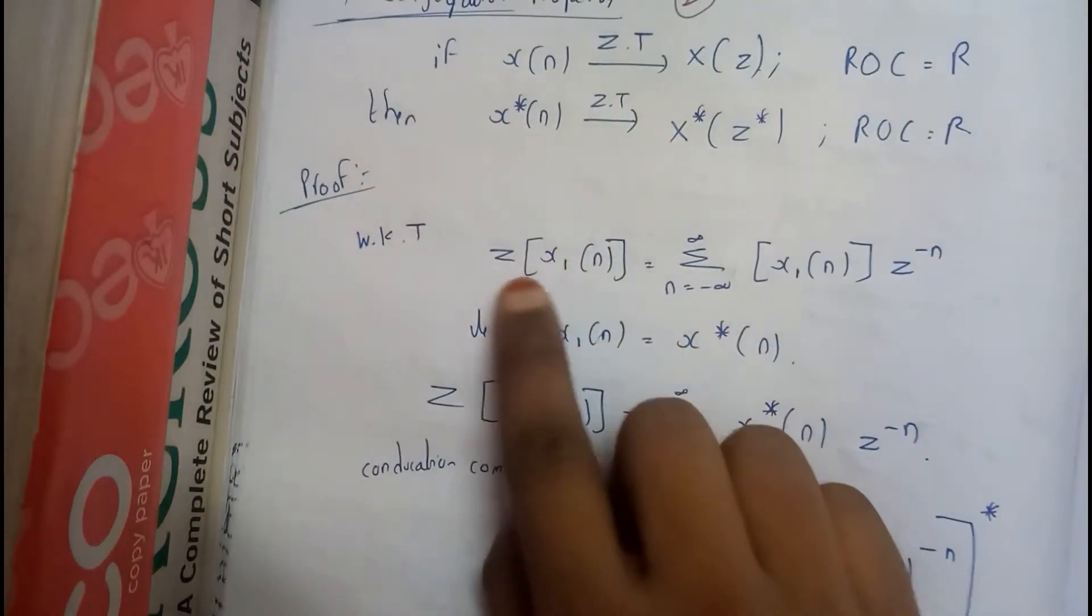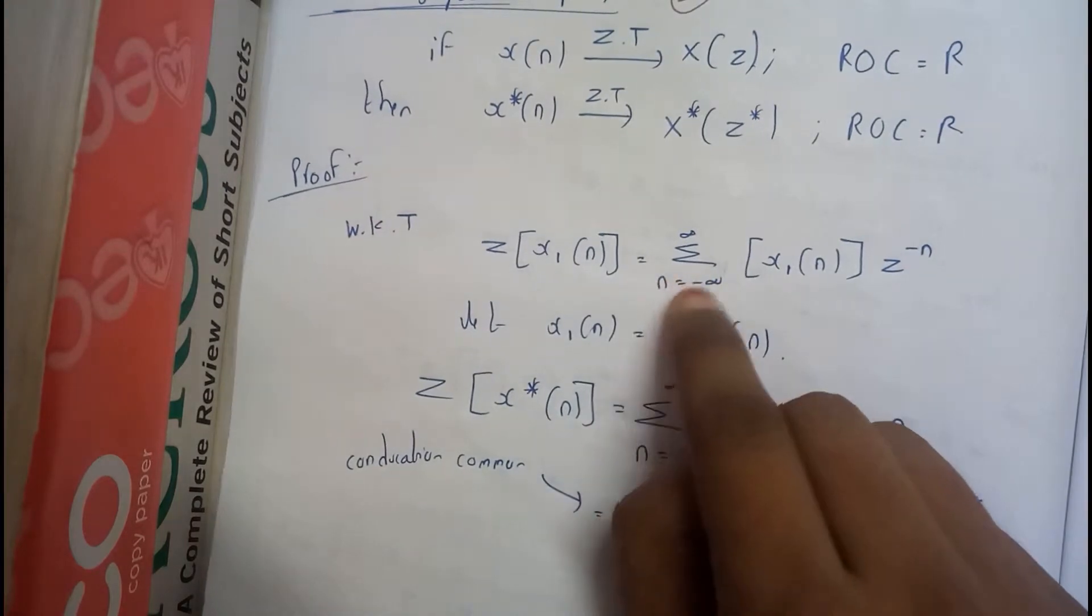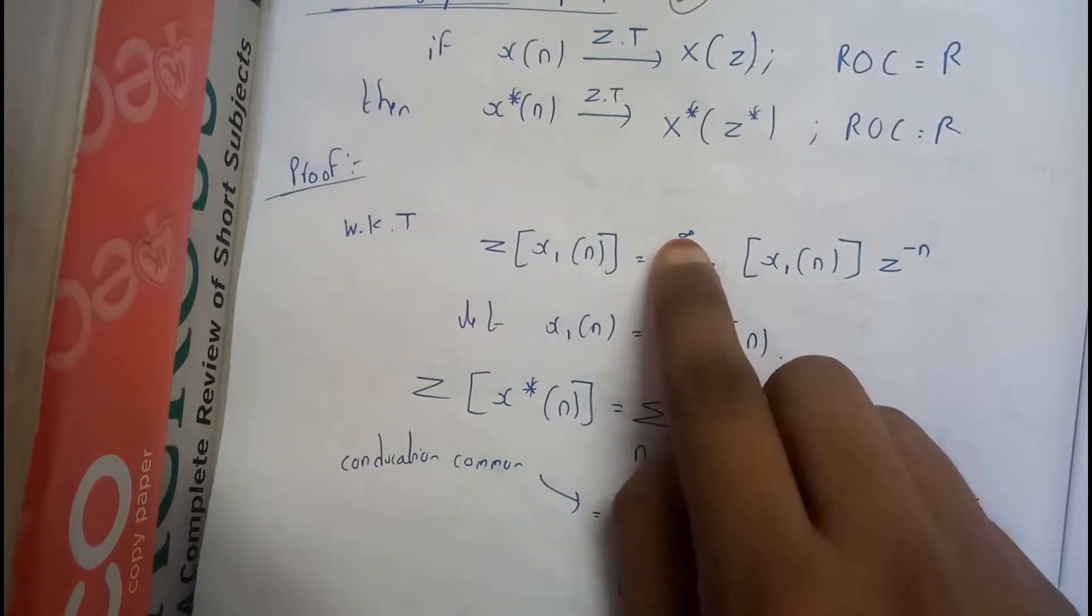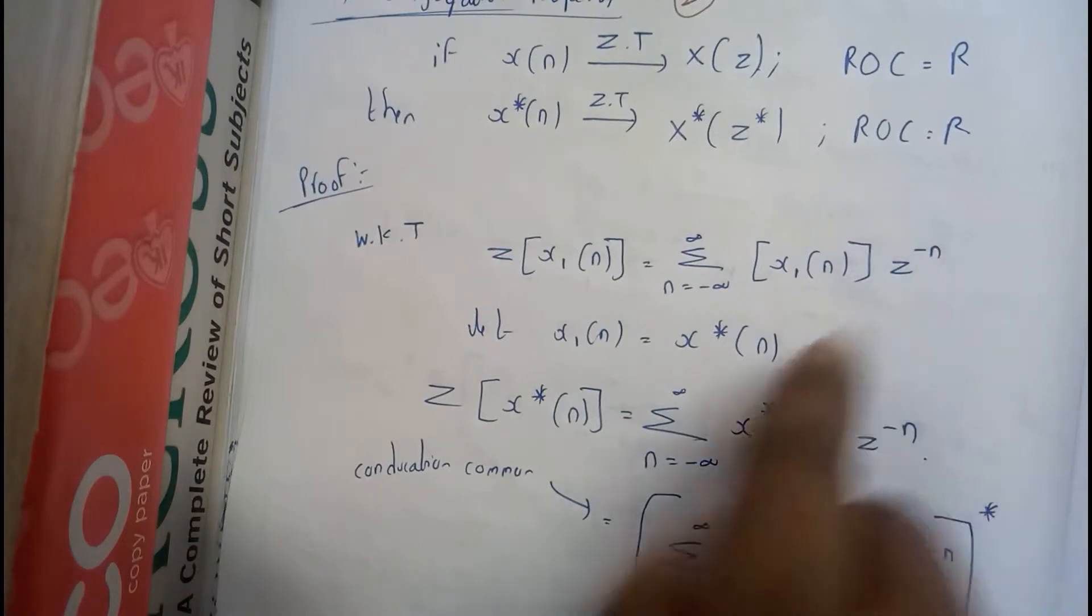So proof. We know that z transform of x1 of n is nothing but sigma n equal to minus infinity x1 of n into z to the power of minus n.